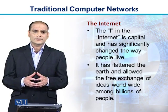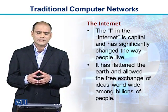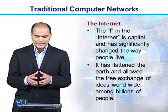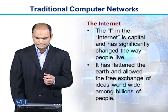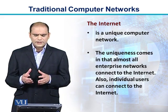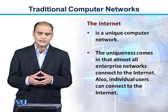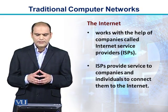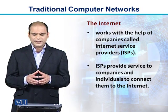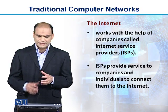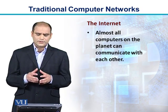Now we come to the next commonly deployed network: the internet. The capital-I internet has significantly changed the way people live. It has flattened the earth and allowed free exchange of ideas worldwide among billions of people. The internet is a unique computer network — its uniqueness comes from the fact that almost all enterprise networks connect to it, and individual users can also connect. The internet works with the help of companies called internet service providers, briefly called ISPs. ISPs provide service to companies and individuals to connect them to the internet.